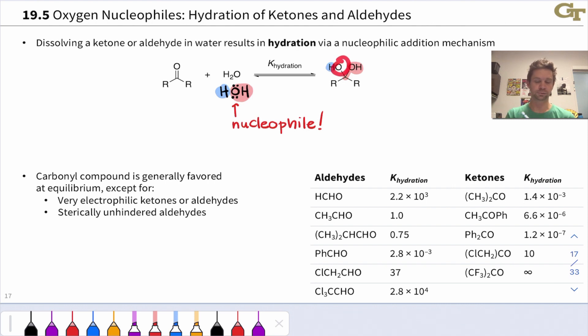The net result after proton transfers is addition of the elements of water across the C=O double bond. So the carbonyl oxygen remains in there. We put a proton on that carbonyl oxygen, and the nucleophilic OH group links up with the carbonyl carbon. This structure is known as a hydrate, and this reaction of water with a ketone or aldehyde is known as hydration. It can occur when we take a ketone or aldehyde and place it in aqueous solution. But the extent to which this occurs depends profoundly on the nature of the substrate.